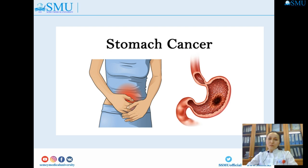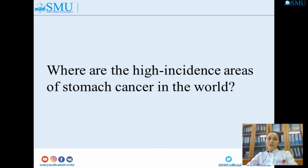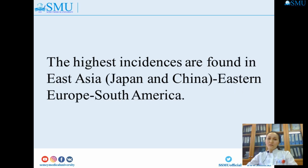Let's talk about stomach cancer. Stomach cancer, also known as gastric cancer, is a cancer that develops from the lining of the stomach. Where are the high incidence areas of stomach cancer in the world? The highest incidences are found in East Asia — Japan and China — Eastern Europe, and South America.